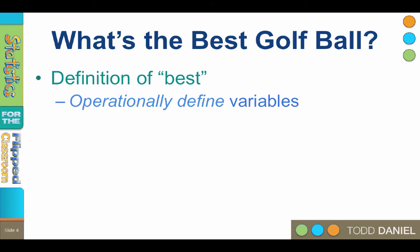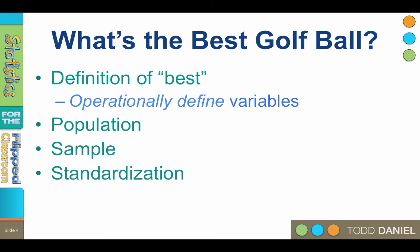Now that we have operationally defined our dependent variable, how are we going to do this research? The first thing we might want to consider is what is our population — the larger group about which we want to know something. That would be golf balls; we want to know something about all golf ball brands available for purchase. We know that because of standardized manufacturing procedures, golf balls have very little variability. Every golf ball in a brand is pretty much like every other golf ball in that brand, and any golf ball in our sample is likely to be like every other golf ball in the population.